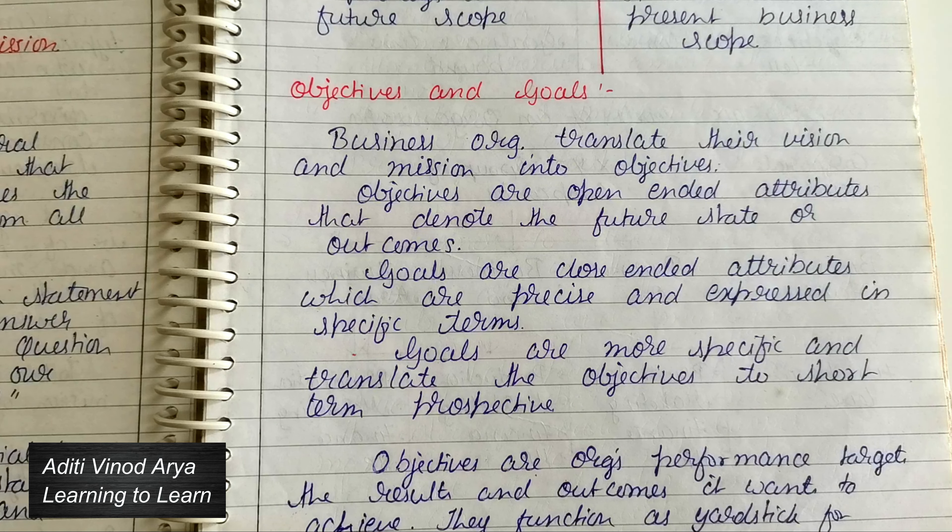First, objectives are open-ended. Open-ended attributes means these are for the future. Of course objectives and goals are for the future, but these are open-ended, meaning there is a lot of flexibility. Goals are close-ended.